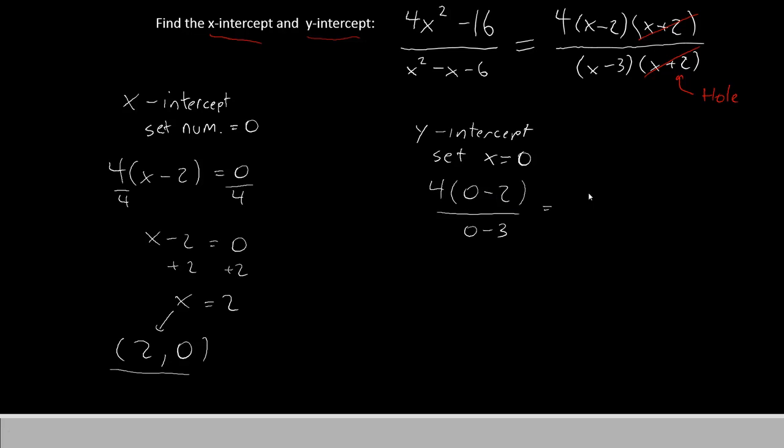Of course, 4 times negative 2 gives us negative 8. And 0 minus 3 gives us negative 3. Since they're both negative, we'll just call this 8 thirds. Of course, it's not good enough to write this as a single number. We have to write an ordered pair. So we'll have 0 and 8 thirds. And that's how you get the x-intercept and the y-intercept.